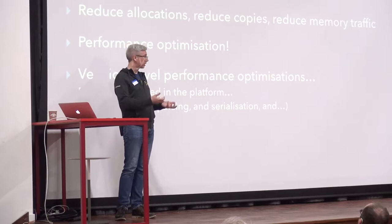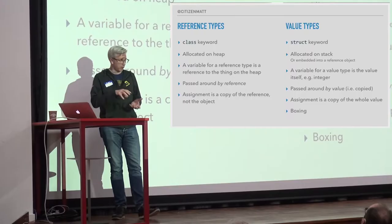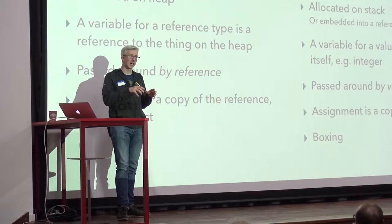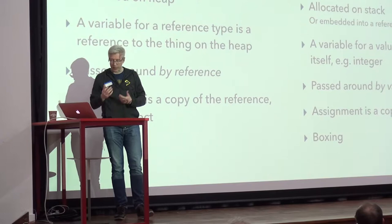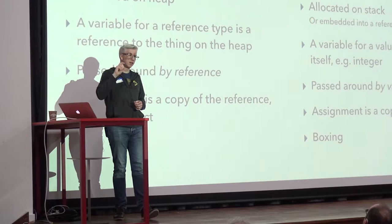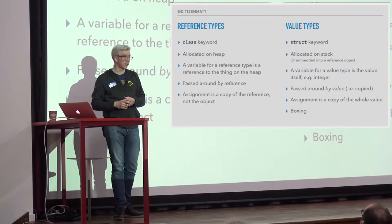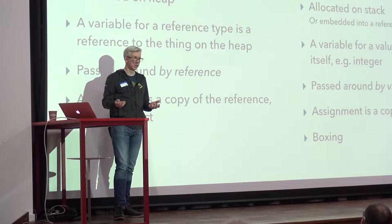Let's have a refresher on the difference between value types and reference types. A reference type uses the class keyword — allocated on the heap. A value type is a struct — allocated on the stack. A variable to a reference type is a reference to the thing on the heap, whereas a variable to a value type is the thing itself. So if you think of an integer, you're not going to put it on the heap and have a reference to it — that's wasteful. If you have a struct describing a point or vector, the variable for that point contains all the data.